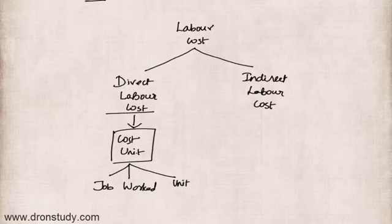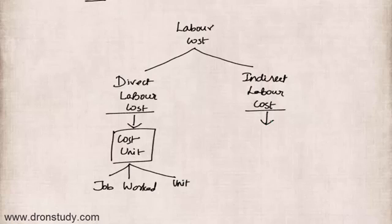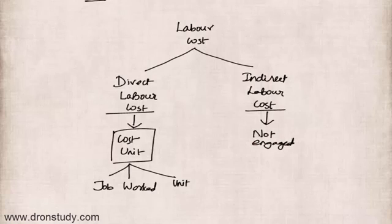Indirect labor cost is the labor cost expended on wages of workmen who are not directly engaged in the production process, and it cannot be easily identified with a cost unit. So indirect labor cost is incurred on wages of workmen who are not engaged in the production process. If wages are paid to them, those wages will be called indirect cost.